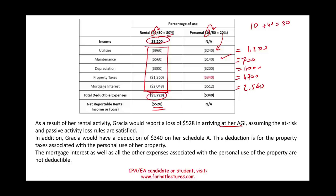You can deduct this loss against other income, assuming you satisfy the at-risk rule, which will be discussed in a separate recording. Additionally, the $340 of property taxes allocated to personal use will go on Garcia's Schedule A. The mortgage interest and other expenses associated with the personal use portion — utilities, maintenance, and depreciation — are not deductible and are simply lost, as they are personal use expenses.